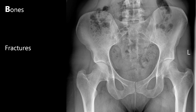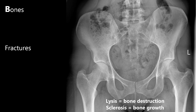Whilst assessing the bony texture, we need to look for lytic lesions or sclerosis. These are both signs of malignancy, which could be from osteosarcoma or, more commonly, from cancer metastases.